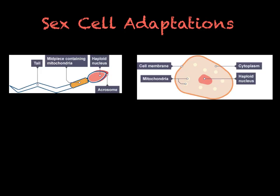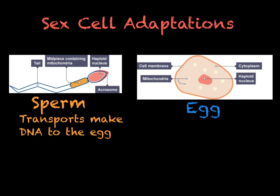The human body produces two very specialised sex cells, or gametes. We have our sperm and our egg, and both of them are adapted to their roles. The function of our sperm is to transport the male's DNA to the female's egg so that the DNA can combine.